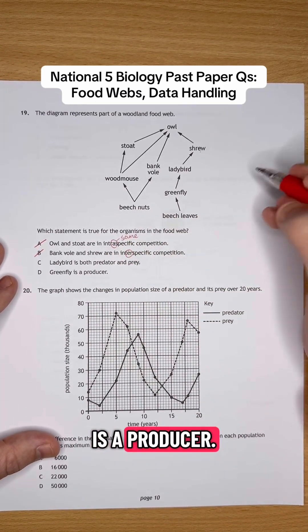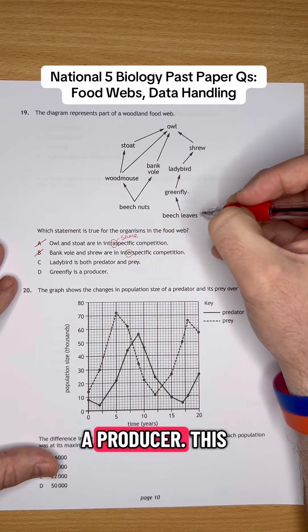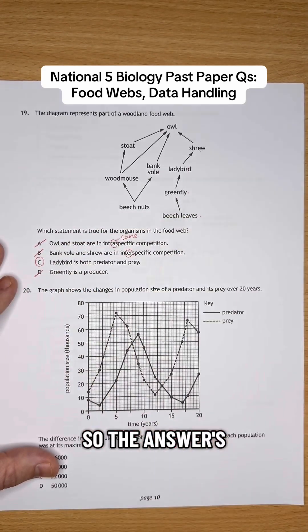The greenfly is a producer. So we can see the greenfly here, but there's an organism below it in the food chain there. So it's not a producer. This is the producer here, the beech leaves. So that one's going to be wrong as well. So the answer is going to be C.